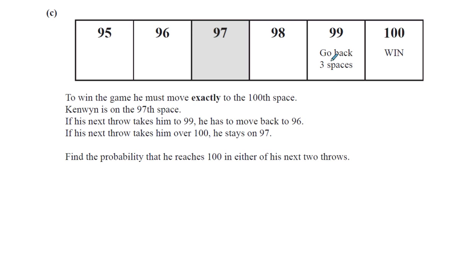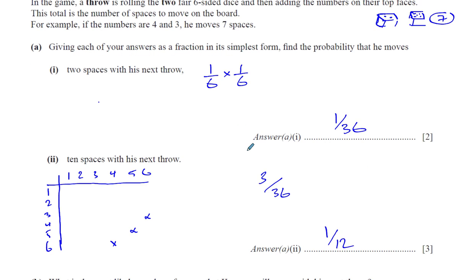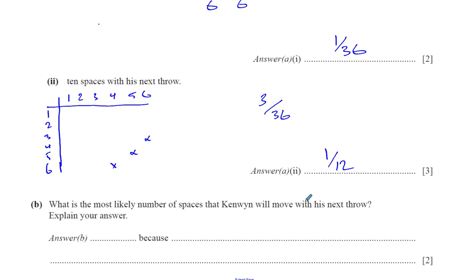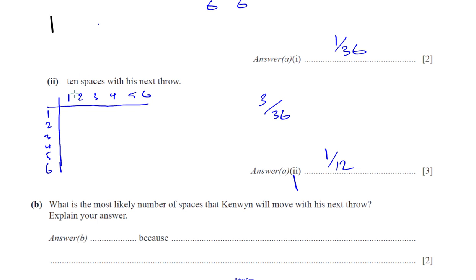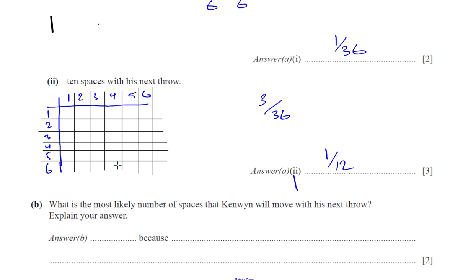Now, part B is down here. Part B: what is the most likely number of spaces that Kenwin will move with his next throw? Well, we've got to find the most likely total, so what we could do here is to make it a bit clearer. I'll just use some straight lines to make it. Those will be straight lines. So we could make some lines down here just to make it a bit neater. Just to make it look neat so you can see what's going on. It's just a rough diagram.